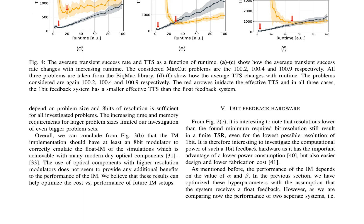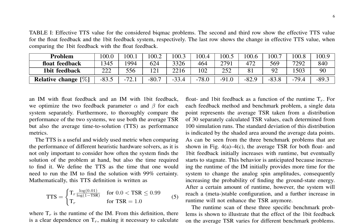The discussion highlights the potential of 1-bit feedback hardware due to its lower power consumption, easier design, and lower fabrication cost. The table on page 6 presents the effective time-to-solution values for various BIC-MAC problems using float feedback and 1-bit feedback systems, with the last row illustrating the change in effective TTS when comparing the two. The paper also discusses the optimization of feedback parameters alpha and beta for each system separately, using both the average TSR and the average TTS as performance metrics.